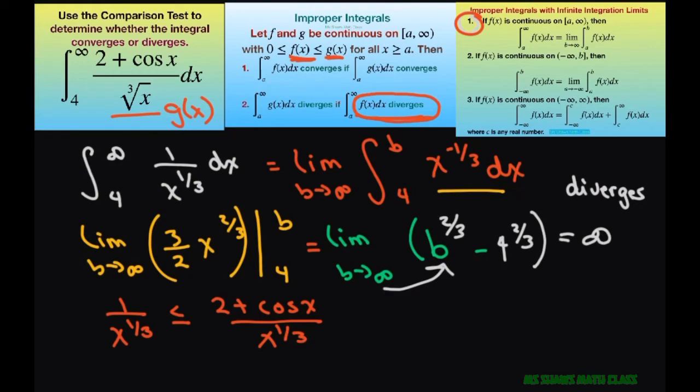Since we have that, our g of x only diverges if our f of x does. So that means our integral from 4 to infinity of 1 over x to the 1 third is less than or equal to the integral from 4 to infinity of 2 plus cosine of x over x to the 1 third dx.